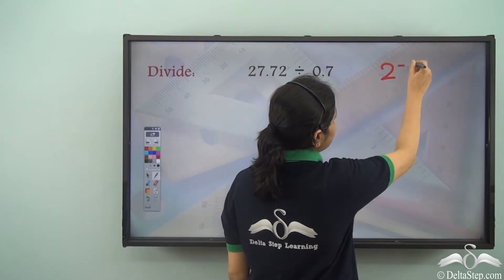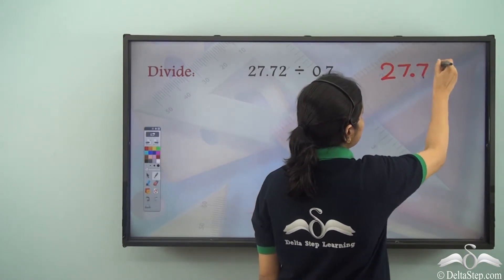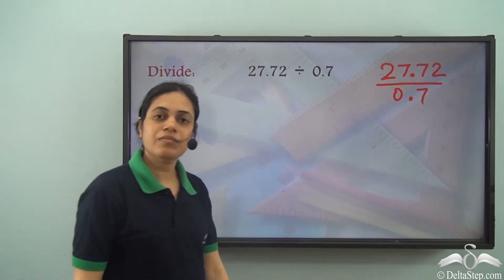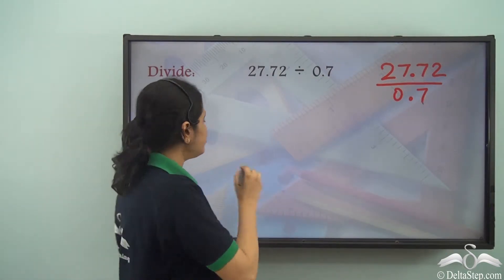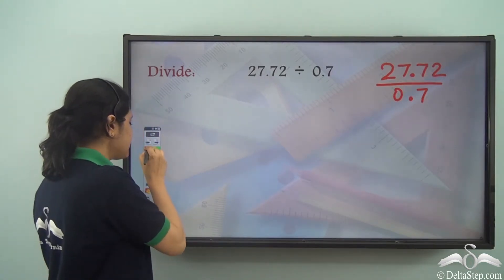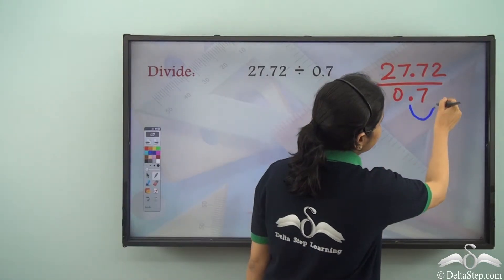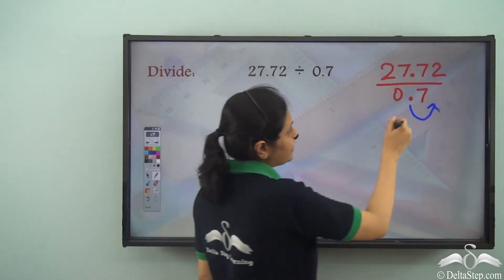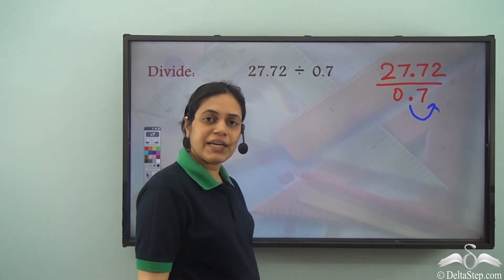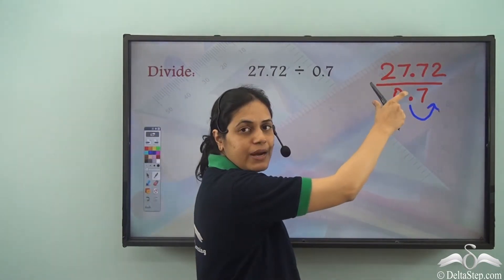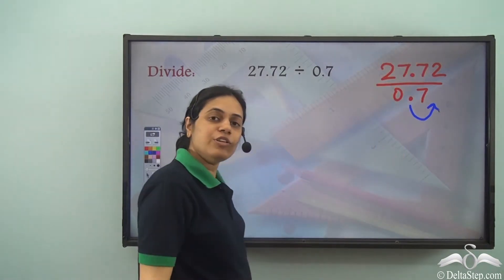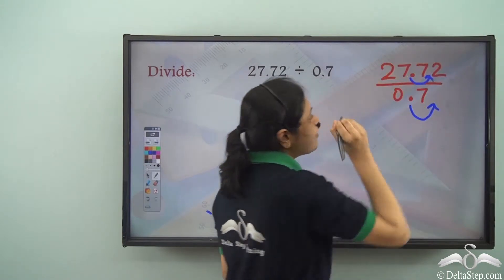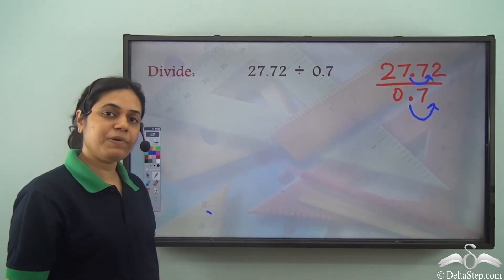So I have 27.72 divided by 0.7. Now in order to bring the decimal point to the right, I need to shift it by one place. Now if I do that, I need to multiply it by 10. And if I multiply the denominator by 10, I need to multiply the numerator also by 10. In which case, this decimal point will also shift by one place to the right.